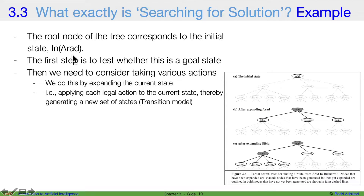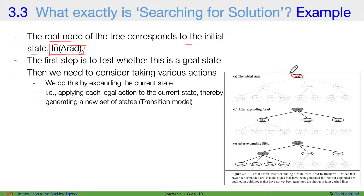For the Romania problem, the root node of the tree corresponds to the initial state — that is, being in Arad. The first step is to check whether this is a goal state or not. When the agent is at Arad, we check: is Arad our goal state? No. Then we need to consider taking various actions. The agent can either go to Sibiu, Timisoara, or Zerind. We do this by expanding the current state.